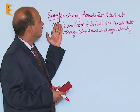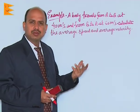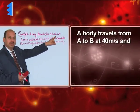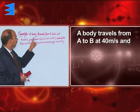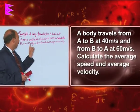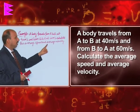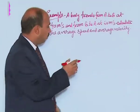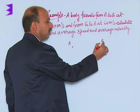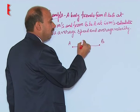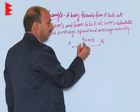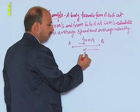Look at this example related to average speed and average velocity. A body travels from A to B at 40 meters per second and from B to A at 60 meters per second. Calculate the average speed and average velocity. Suppose this point is A and this point is B — the body is going from A to B at a speed of 40 m/s and coming back with a speed of 60 m/s.